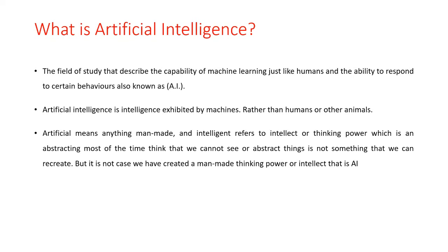The first point is: what is meant by Artificial Intelligence? The field of study that describes the capability of the machine to learn just like humans, and the ability to respond to certain behaviors, is known as AI — Artificial Intelligence. This artificial intelligence is the intelligence exhibited by machines rather than humans or other animals.